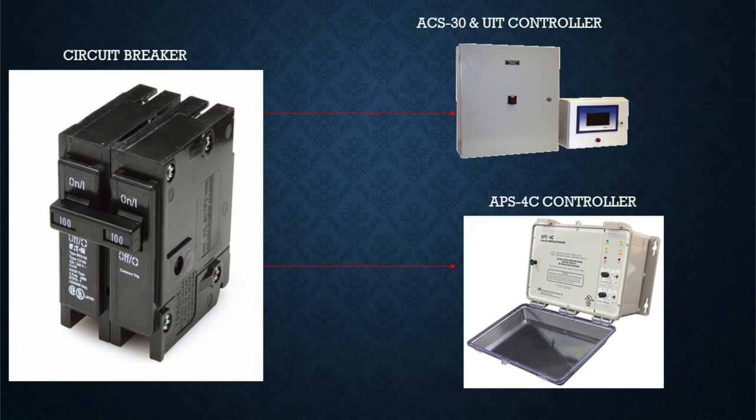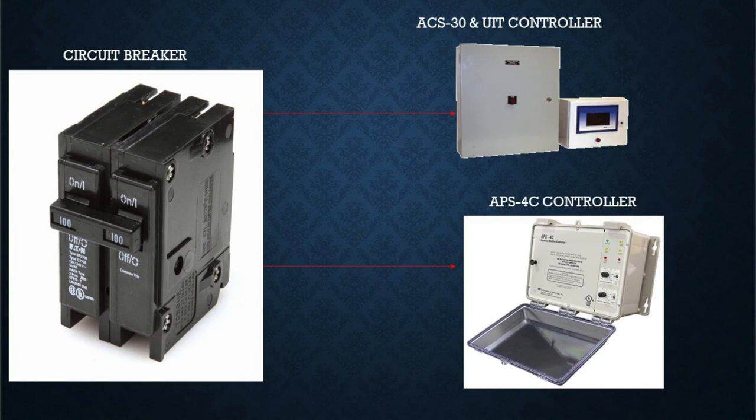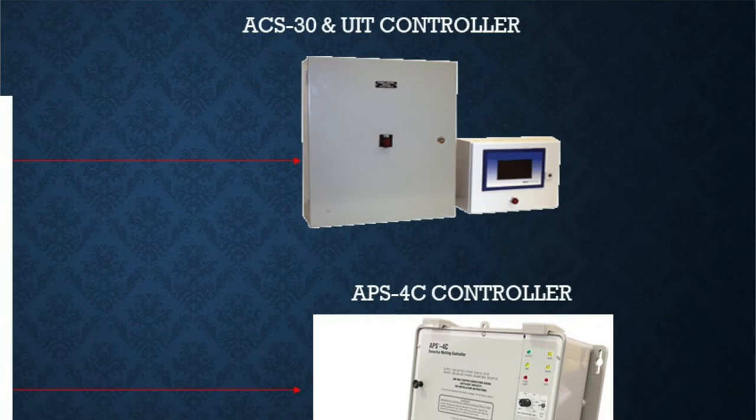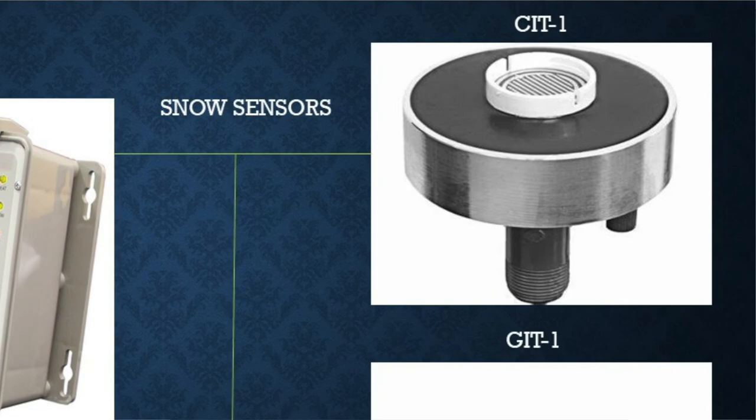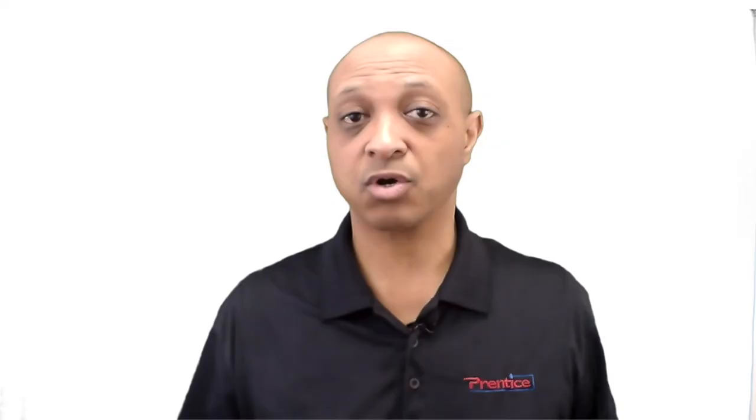The basic setup of a roof and gutter system is similar to a regular pipe system. First you have power distribution — a circuit breaker. From the breaker you have a controller, such as a snowmelt controller or an ACS-30 system from previous videos. The controller is energized when a signal is sent from the snowmelt sensors. There are two sensors: the first is a CIT, a snowmelt sensor mounted on or near the roof.